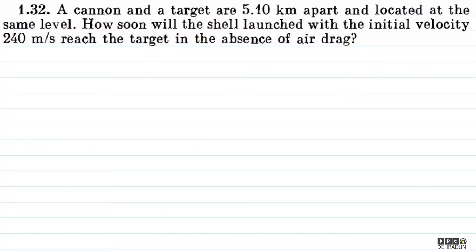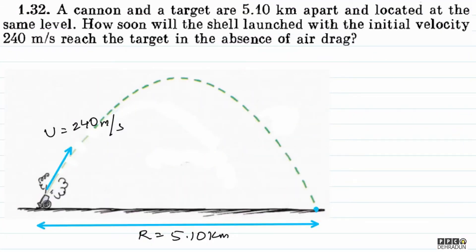Let's have a look at this beautiful problem from Irodov. The question says, a cannon and a target are 5.10 km apart and located at the same level. So, let's try to understand the question.